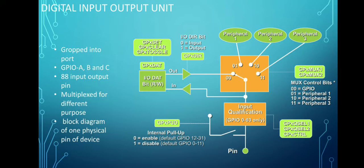This is the block diagram of a single pin of the device. It consists of several register sets: input qualification registers, pull-up registers, data registers, direction registers, and MUX control bit registers. The input qualification register is used to remove noise from signals. The pull-up register is used to keep values at a high impedance state.